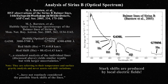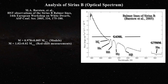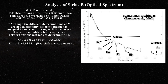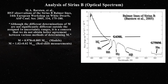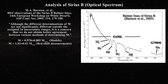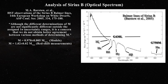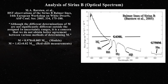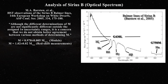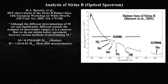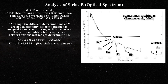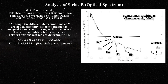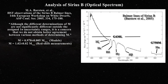It also becomes clear in this paper that spectroscopic methods of mass determination are not in agreement with redshift methods. Although different determinations of mass are not significantly different outside the assigned 1-sigma uncertainty ranges, it is a concern that better agreement between various methods of determining mass is not obtained. They had obtained a mass of 0.978 solar masses from their models and 1.02 solar masses from the gravitational redshift measurements. However, remember that all these measurements are based on the same observation — the behavior of the Balmer lines in Sirius B. One method examines the width of the line, the other examines the redshift, but both are fundamentally related, so it is no wonder that there is at least some agreement.